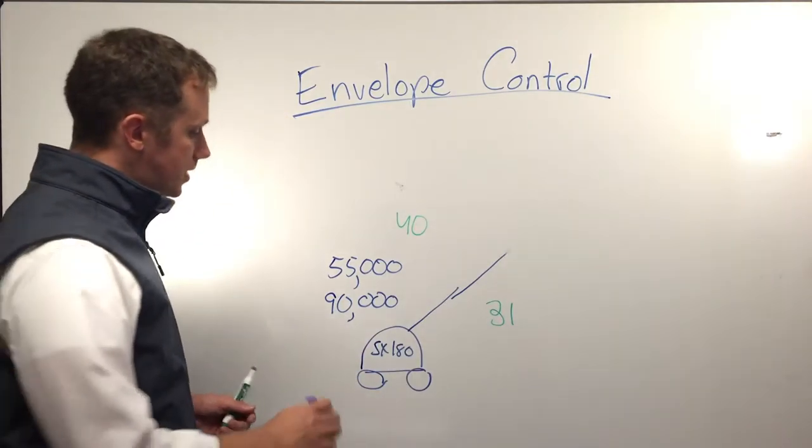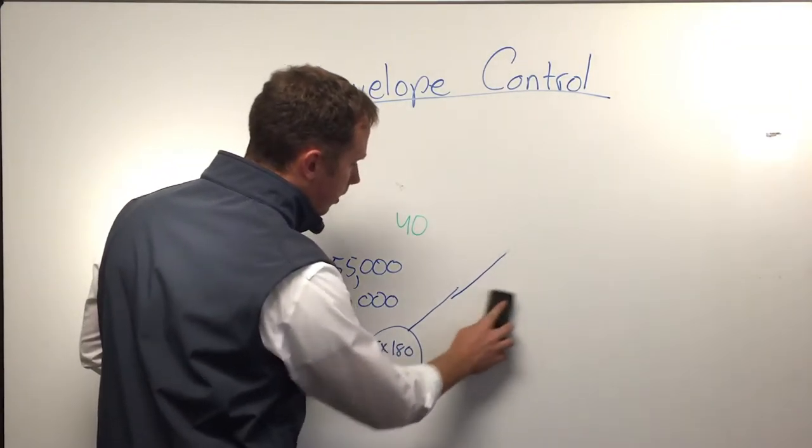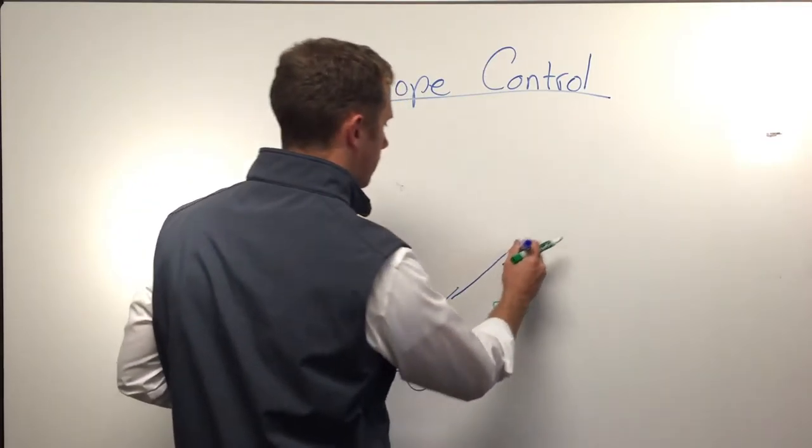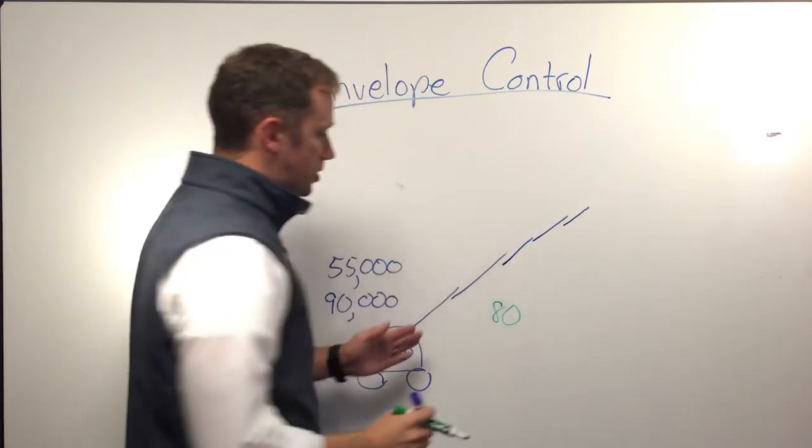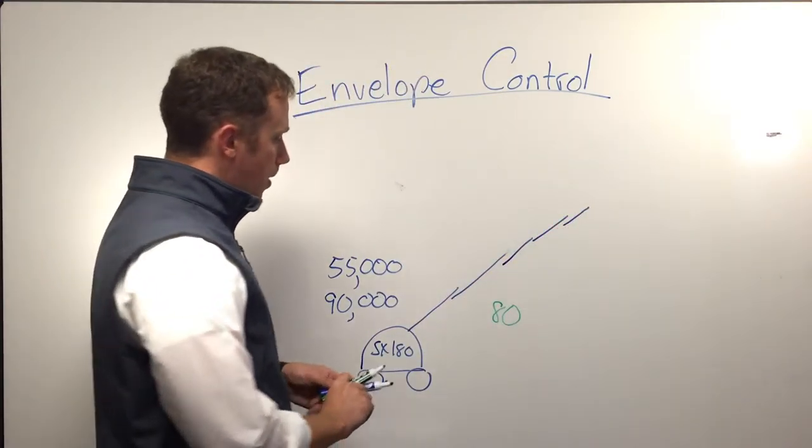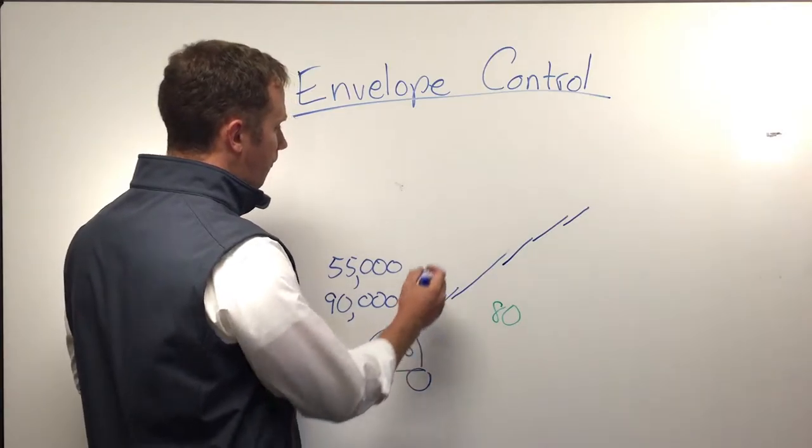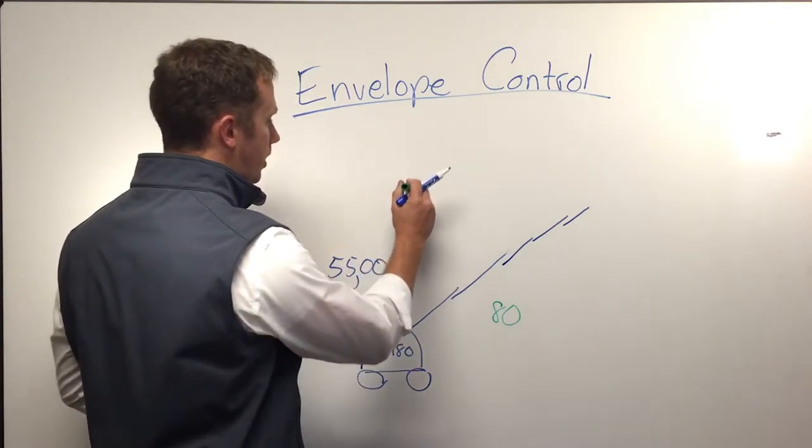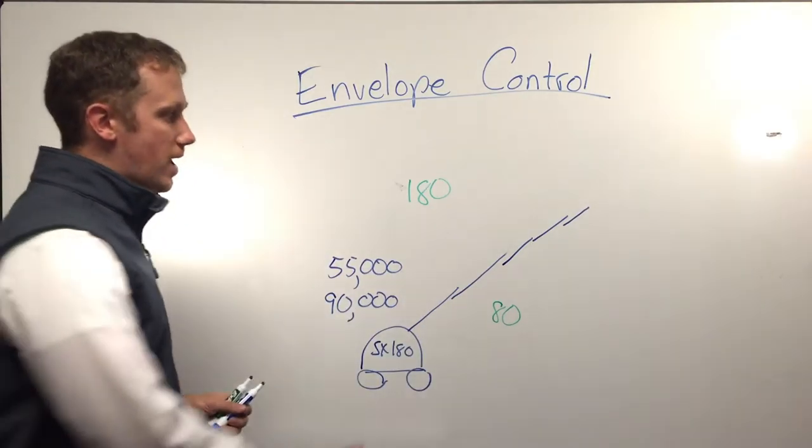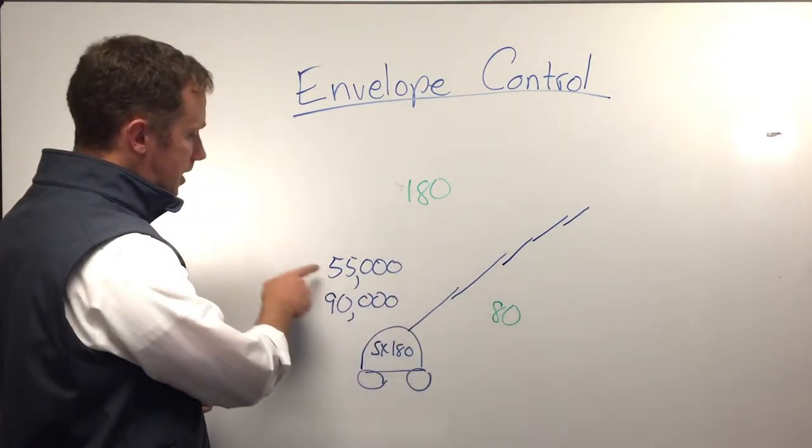Now why is that? On the SX 180, we limit our outreach to only 80 feet simply by restricting the amount the boom can extend out when in the outreach mode, but we allow it to extend out further all the way up to 180 feet when it's in the vertical position.